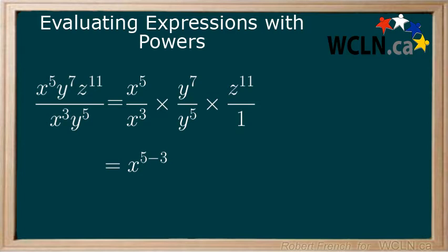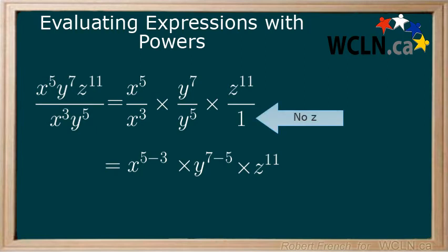Second, let's work with the y variable and we get y to the power of 7 minus 5. Finally, we are left with z to the power of 11. There is no z in the denominator, so this will just stay as z to the power of 11. Now we can bring these back together for our simplified expression.